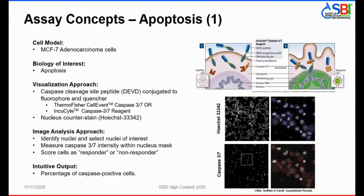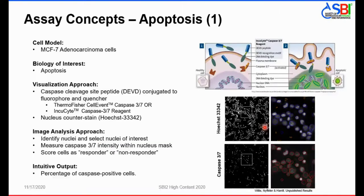Returning to our HCS assay examples — the apoptosis assay concept. The cell model is the MCF7 adenocarcinoma model. The biology of interest is apoptosis. The visualization approach uses a caspase cleavage DEVD peptide — the Thermo Fisher CellEvent Caspase 3/7 or alternatively the IncuCyte Caspase 3/7 reagent — along with a nucleus counterstain, Hoechst 33342. For image analysis, we identify and select nuclei, measure the caspase 3/7 intensity within the nucleus mask, scoring each cell as a responder or non-responder based on intensity. The intuitive output is the percentage of caspase-positive cells.